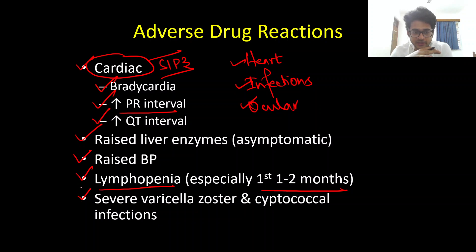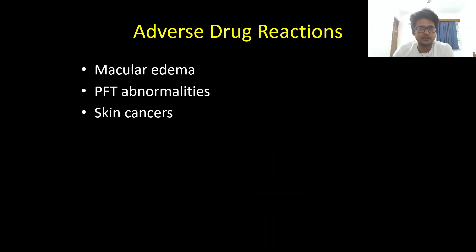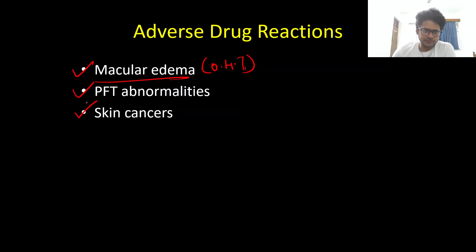Fingolimod can cause disseminated, severe, and fatal varicella zoster as well as cryptococcal infections. It is therefore very important to check whether the patient has prior immunity to chickenpox. If unsure, obtain serum IgG varicella titers, and if the patient is negative, vaccinate before starting the medication. It can also cause macular edema in 0.4% of patients, and subclinical pulmonary function test abnormalities.